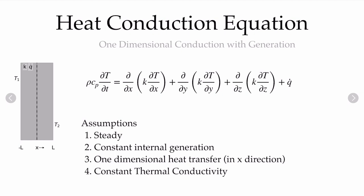Starting with our heat conduction equation in Cartesian coordinates, we'll go through our assumptions. The first assumption is that the problem is steady, so there are no changes with time, which eliminates the energy storage term. Assumption 2 is constant internal generation, so we'll keep our q-dot term. Assumption 3 is one-dimensional, so variations in y and z are set to 0, leaving just the conduction term in the x direction plus q-dot equal to 0.